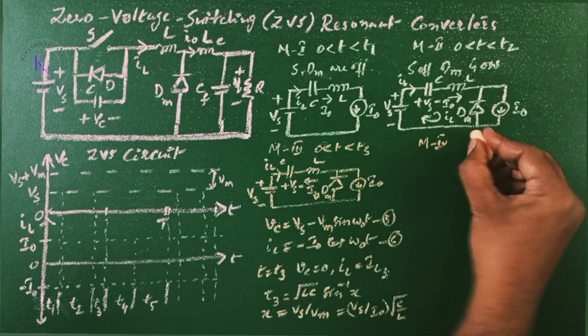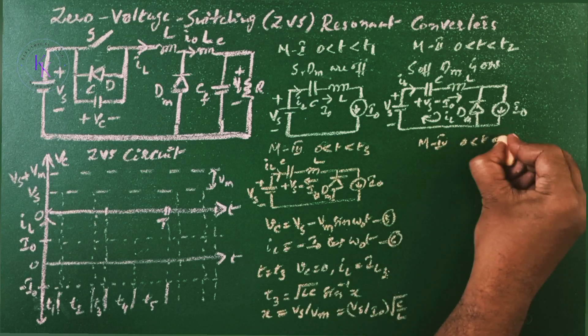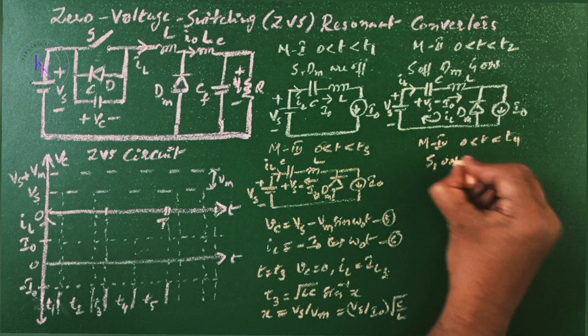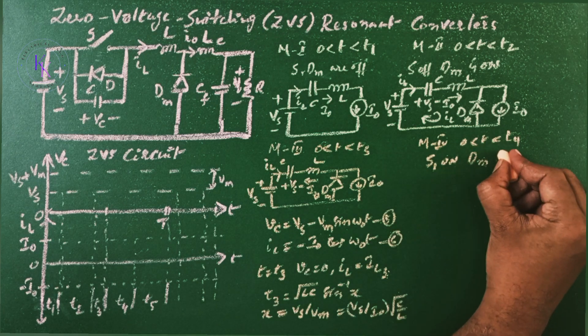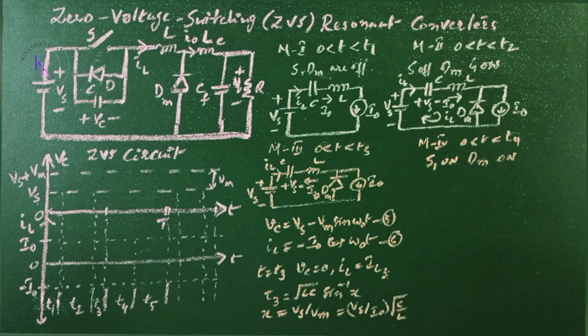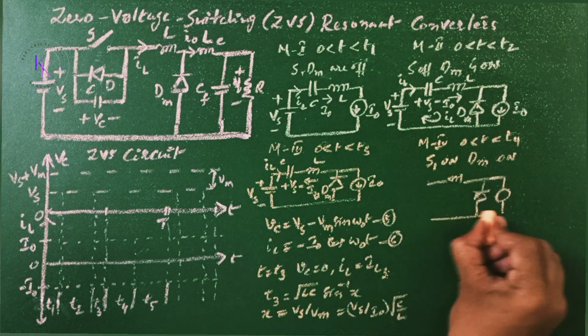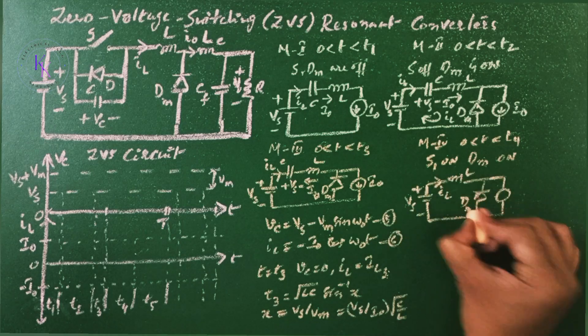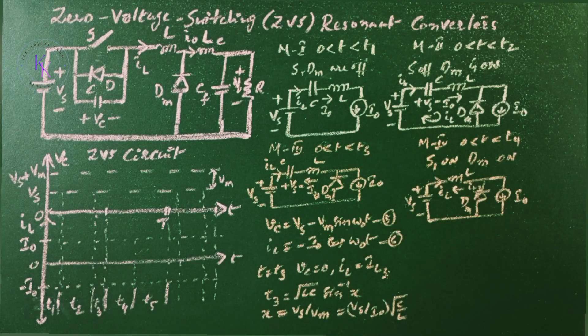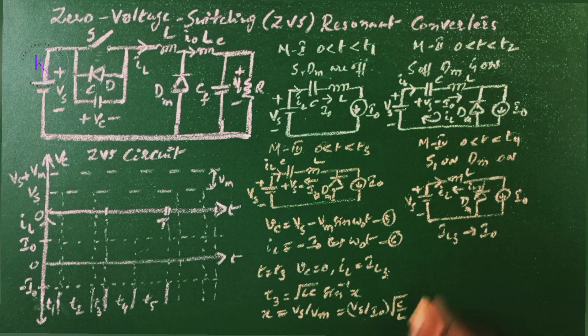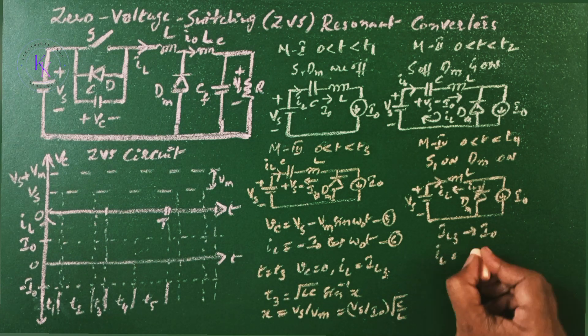Mode 4 is in between zero T and T4. Here the switch S1 is turned on and DM is already in on state. Then the equivalent circuit will be...